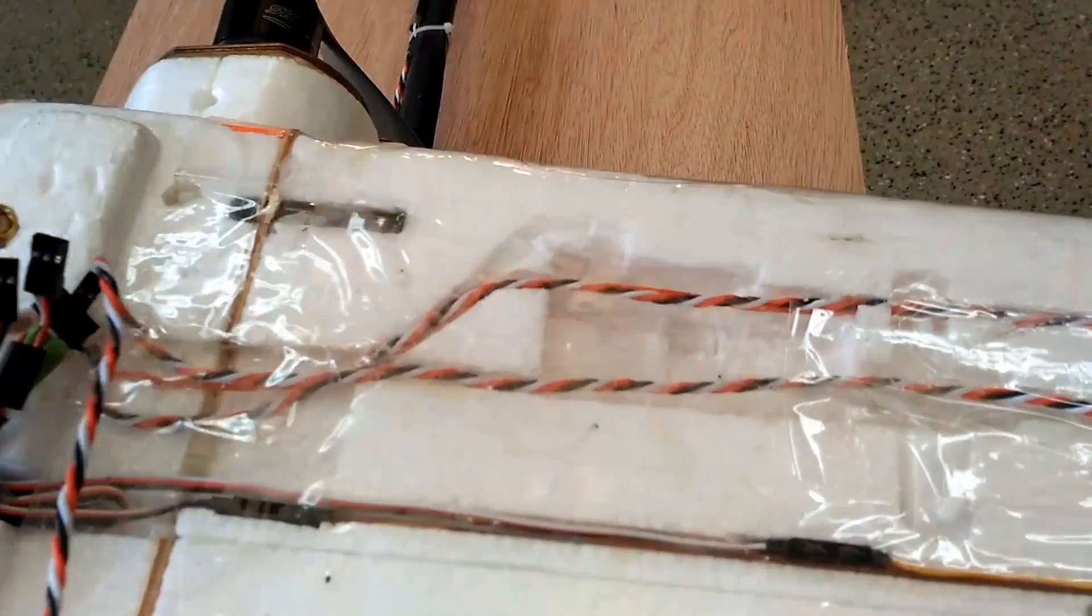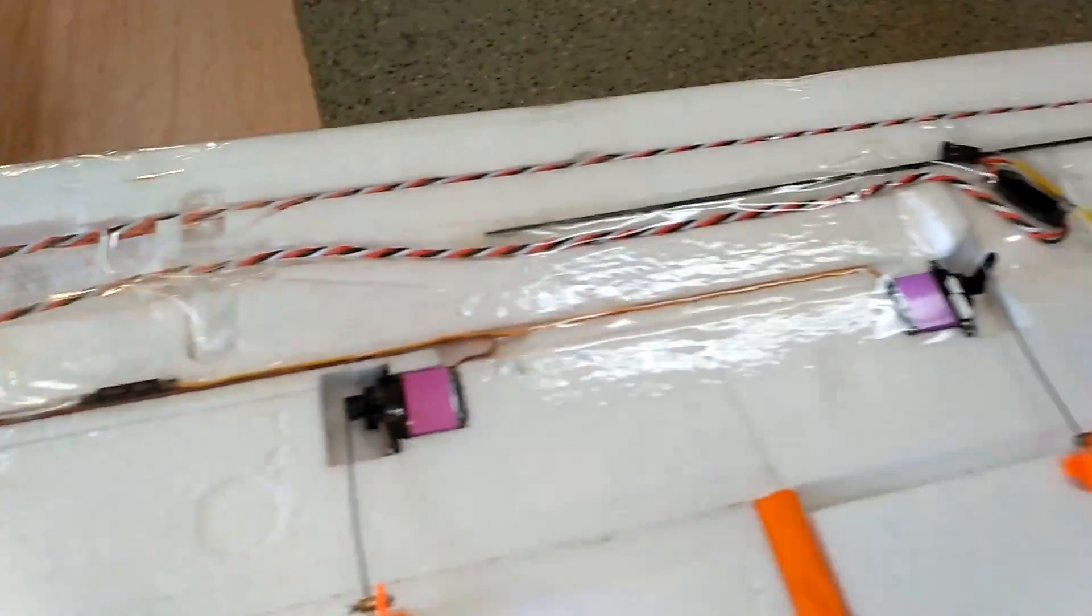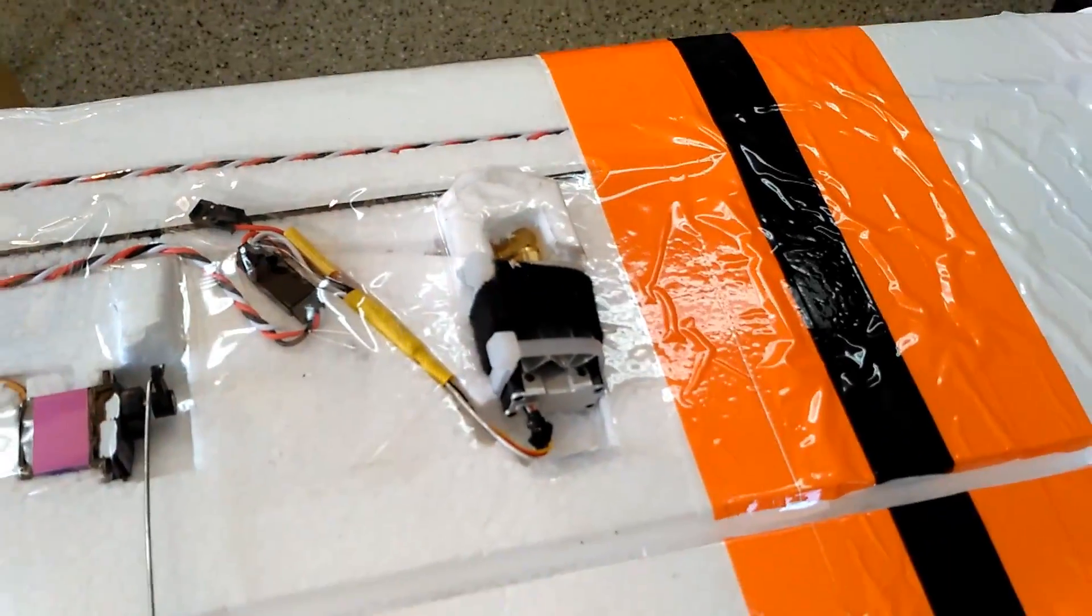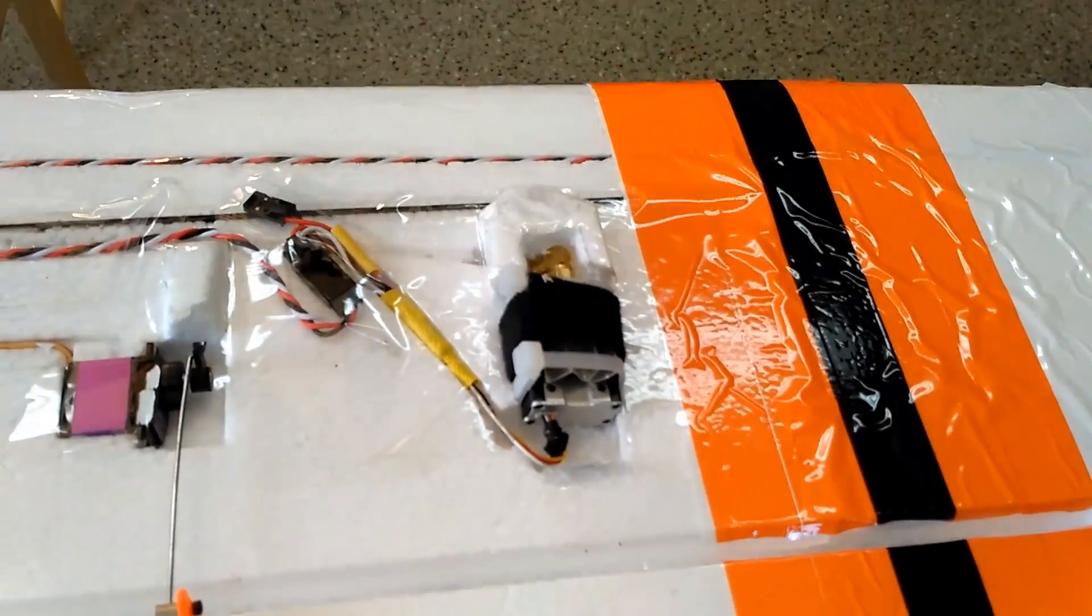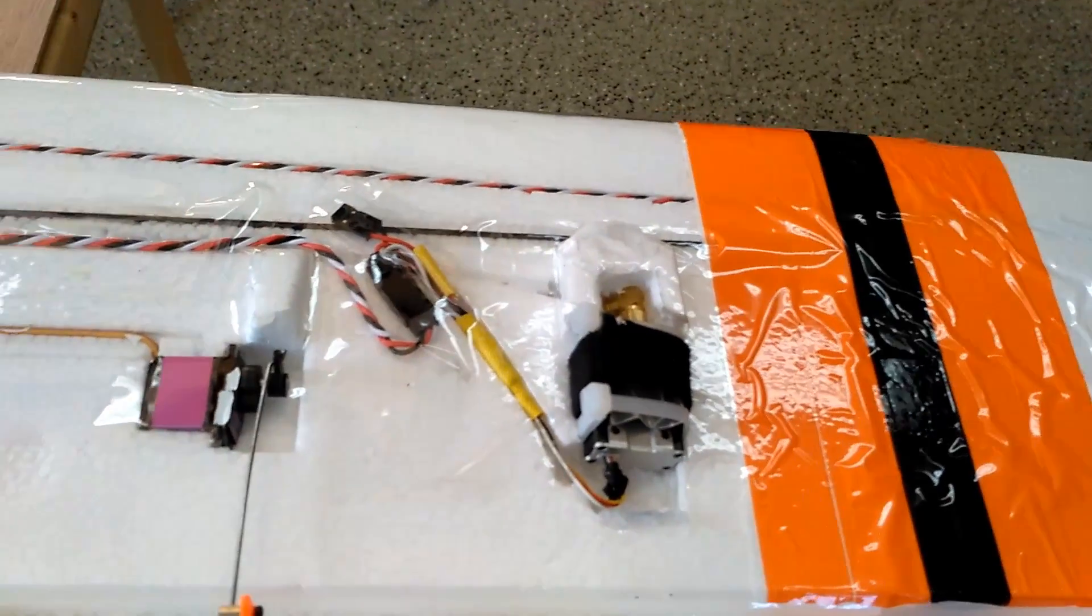At one point I had it mounted out here in this pocket. I found it better to mount the antenna directly to the transmitter. So I do that now. It's just held in there with some Velcro and there's a little styrofoam cap to protect it.